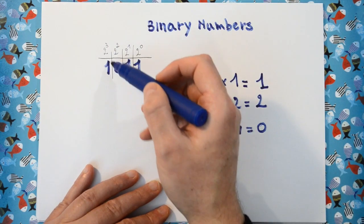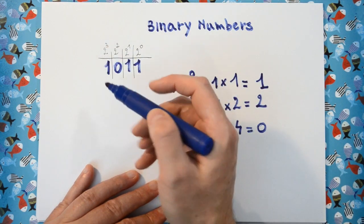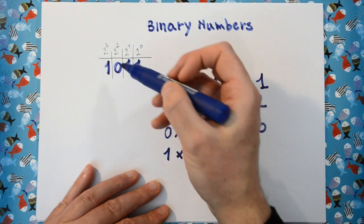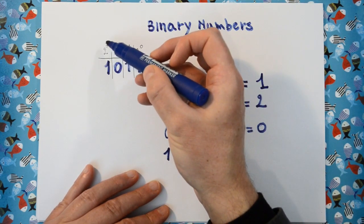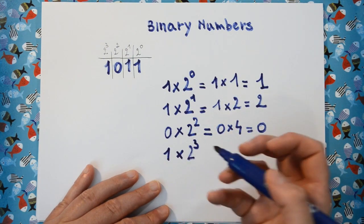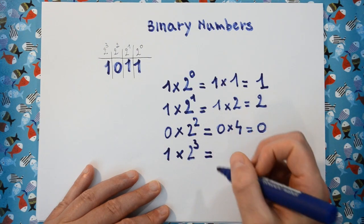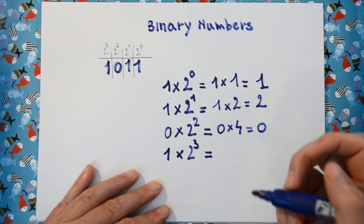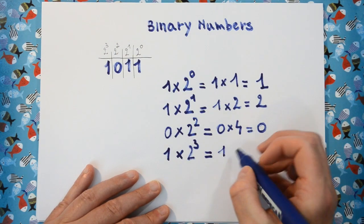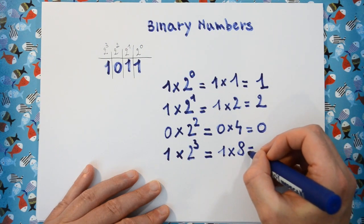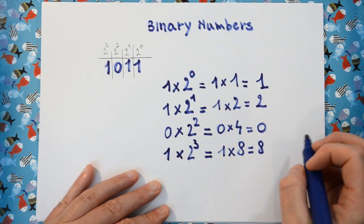Then the last bit, the fourth bit, the fourth column in this binary number is 1 and stands for how many times we have 2 to the power of 3. So we have 1 times 2 to the power of 3. 2 to the power of 3 is 2 times 2 times 2, which is 8. So we have 1 times 8 equals 8.